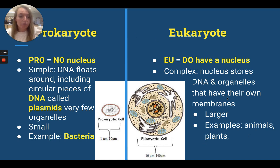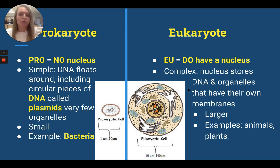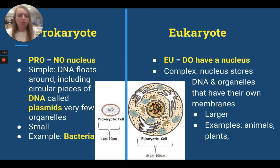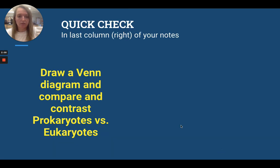Let's quickly review eukaryotes. Remember, eukaryotes do have a nucleus — those are cells like ours. They're complex. There's tons of DNA in there, and organelles. Their organelles are fancy; they've got membranes around them. They're larger. We've got plants and animals, and we've spent a lot of time talking about those different types of cells.